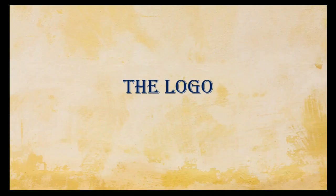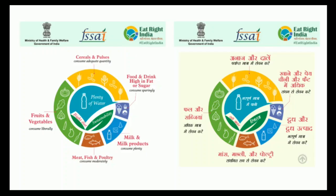Now let's discuss the logo of the Eat Right India movement. If we analyze this logo we can see different colors. All these different colors represent the Indian Thali or a balanced diet. Starting with the green color: it represents fruits and vegetables, and the amount should be liberal — you should consume fruits and vegetables liberally.